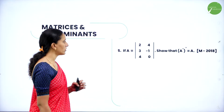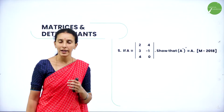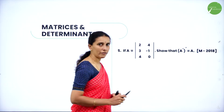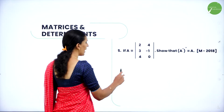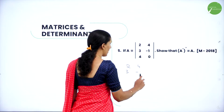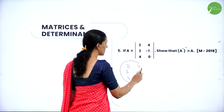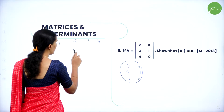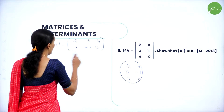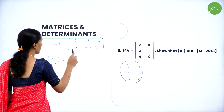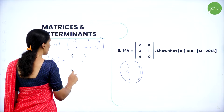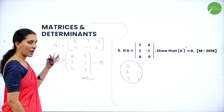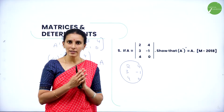If A = [2, 4, 3; -1, 4, 0], show that (A dash) dash equals A. We need to find the double transpose of a given matrix. Transposing A gives A dash = [2, -1; 4, 4; 3, 0]. Transposing again gives [2, 4, 3; -1, 4, 0], which is nothing but A. Hence it is proved: when you transpose the same matrix twice, you get back the same matrix.